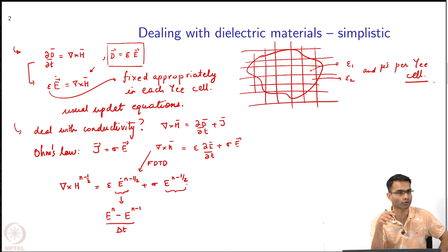Average it. I do not want to be storing electric field at half time integer instance also. The best thing to do is to replace this term by e n plus e n minus 1 by 2.